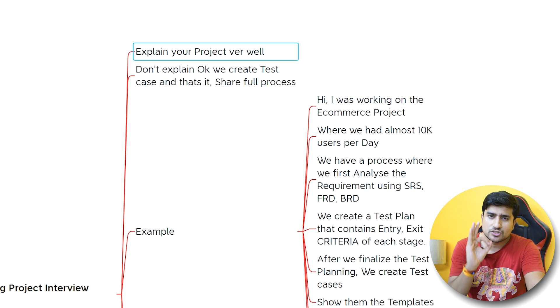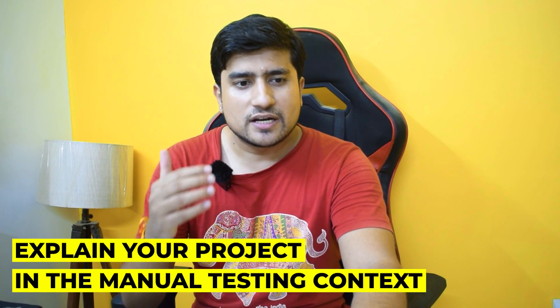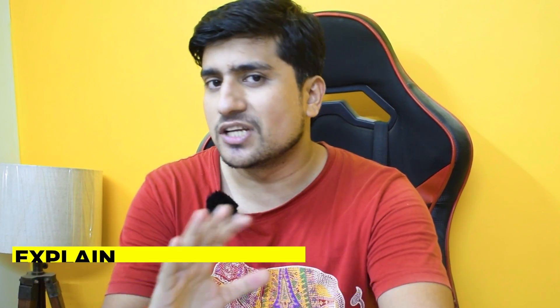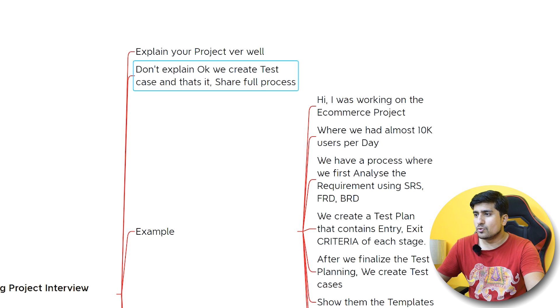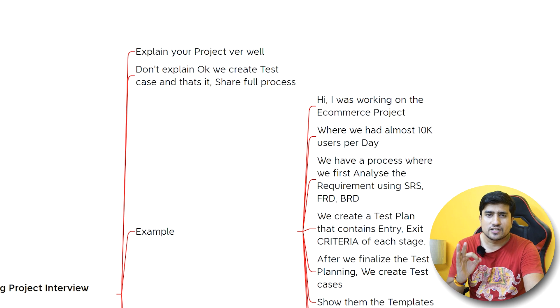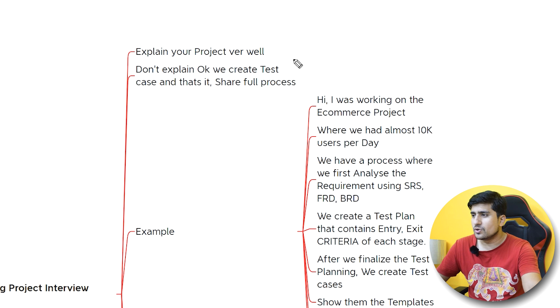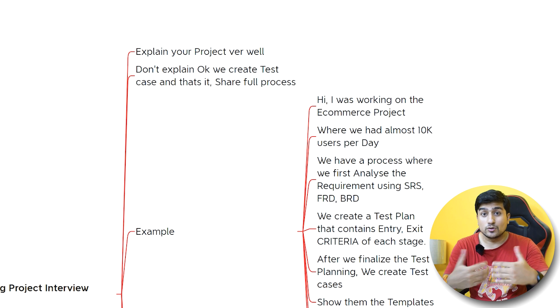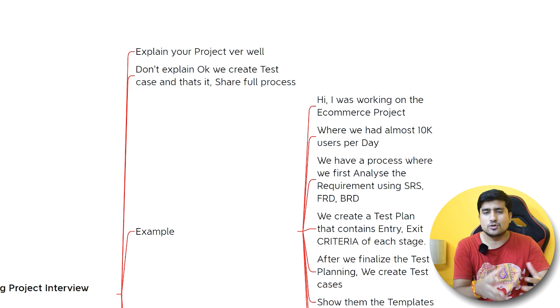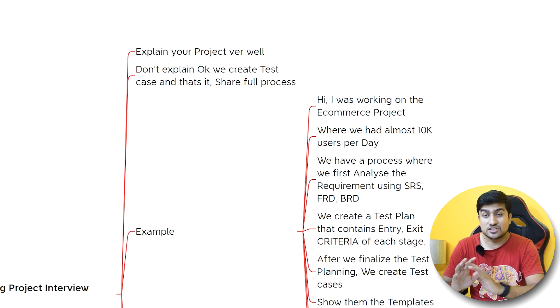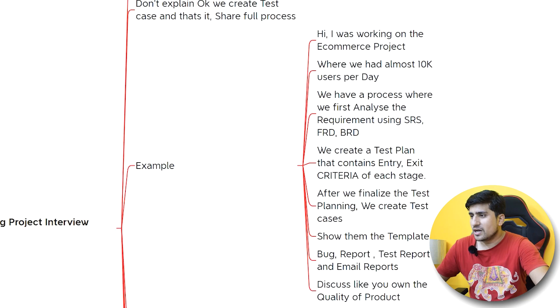Suppose I ask you: 'Explain your project and what exactly you have done in the manual testing context.' Generally, what people do is explain their project in one or two lines — that is the biggest mistake you can make. For example, a common wrong answer is: 'Hi, I have done this e-commerce project where I have written some test cases.' That's it. This is a very big no.